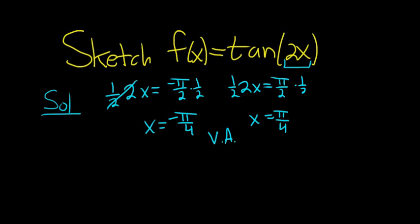So now we'll draw the y-axis and the x-axis. So there's x, there's y, and then you just plot the asymptotes. So here's negative pi over 4. And then here's pi over 4.